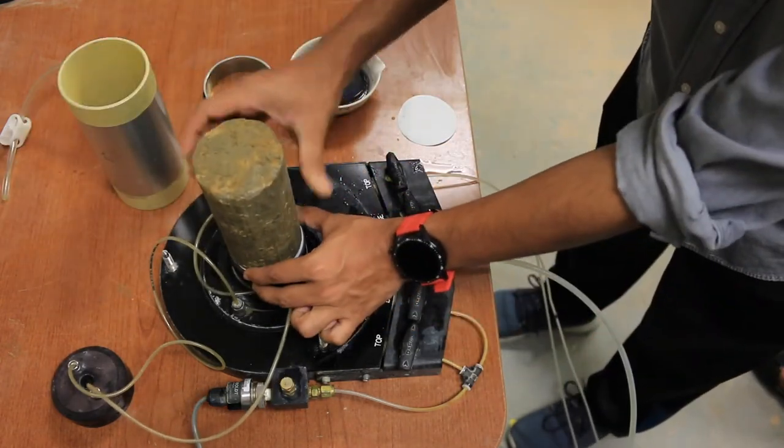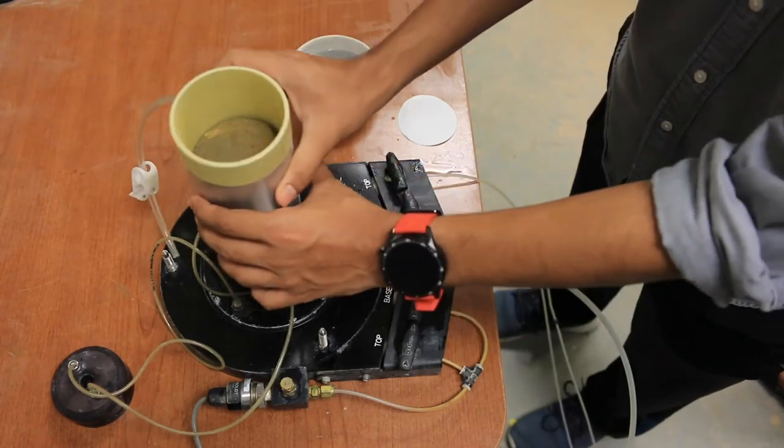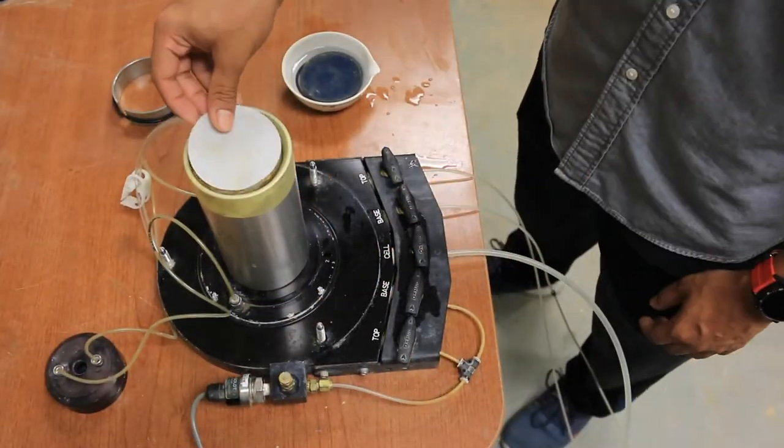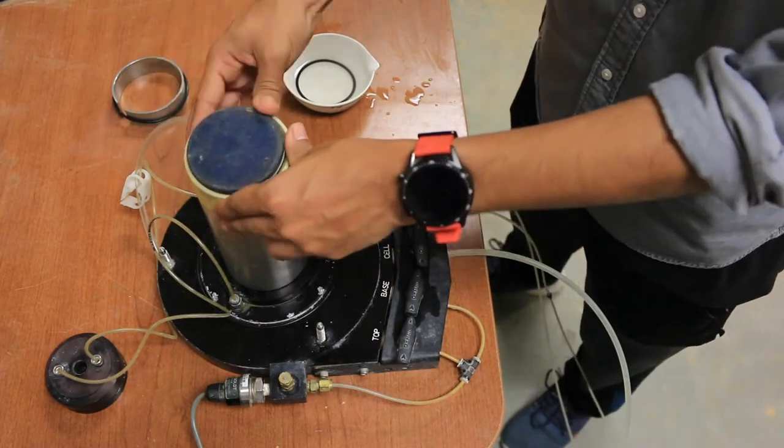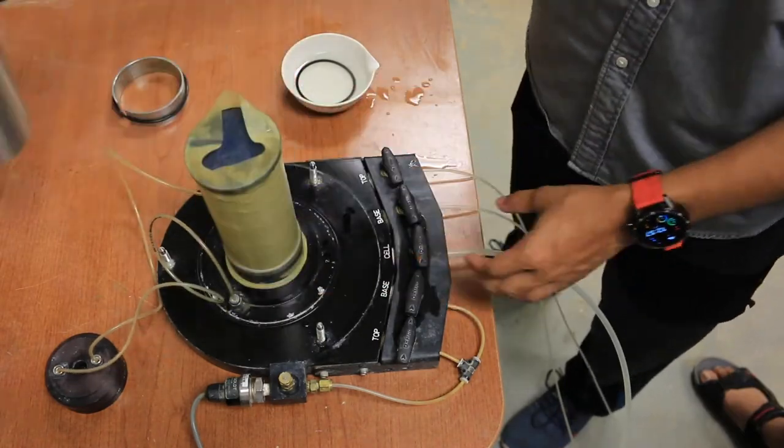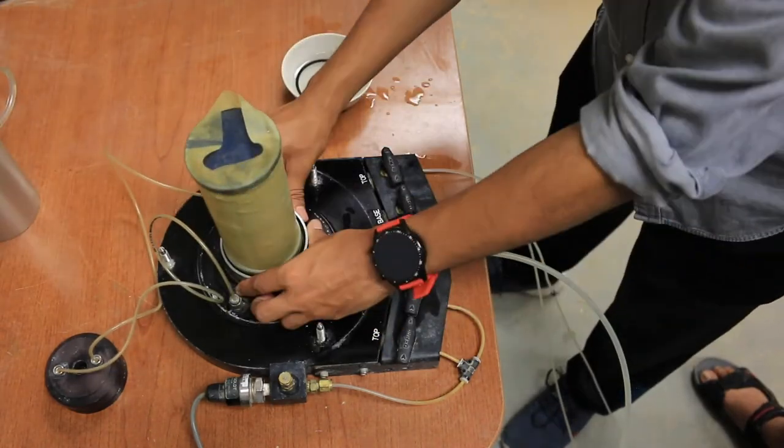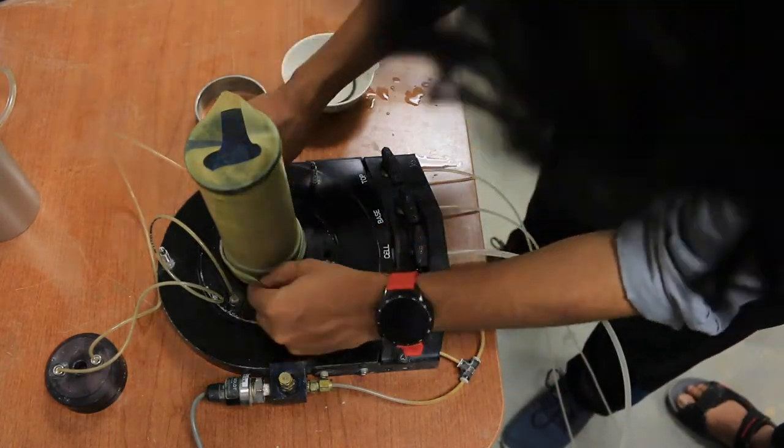Place the sample on the triaxial base. Put the latex membrane around the porous disk. Remove the membrane stretcher. Put rubber o-rings at the bottom of the base to grip the ends of the membrane on the pedestal.